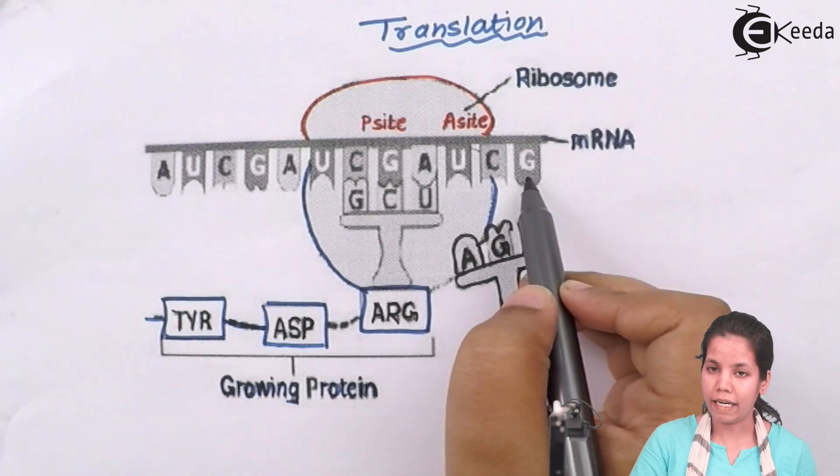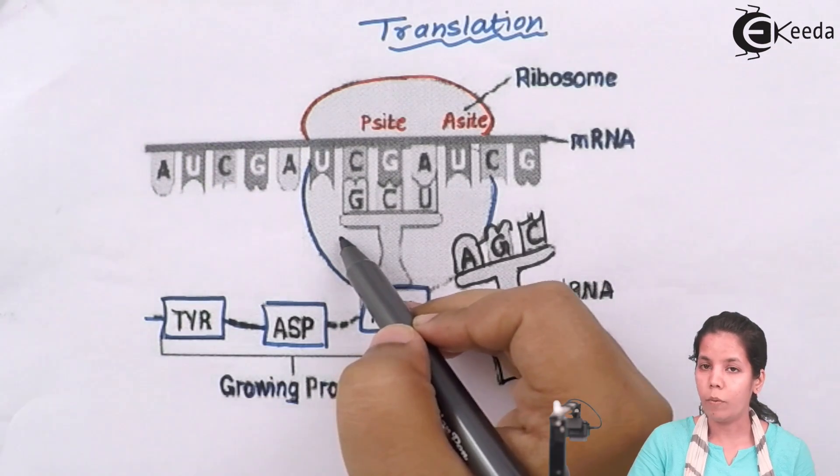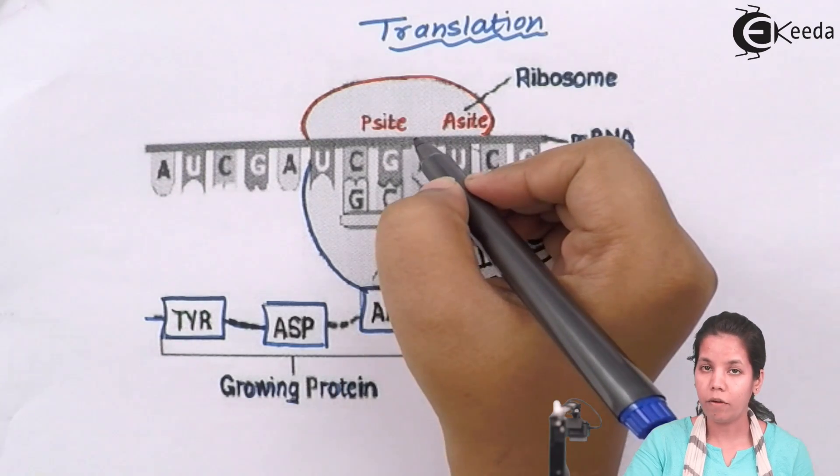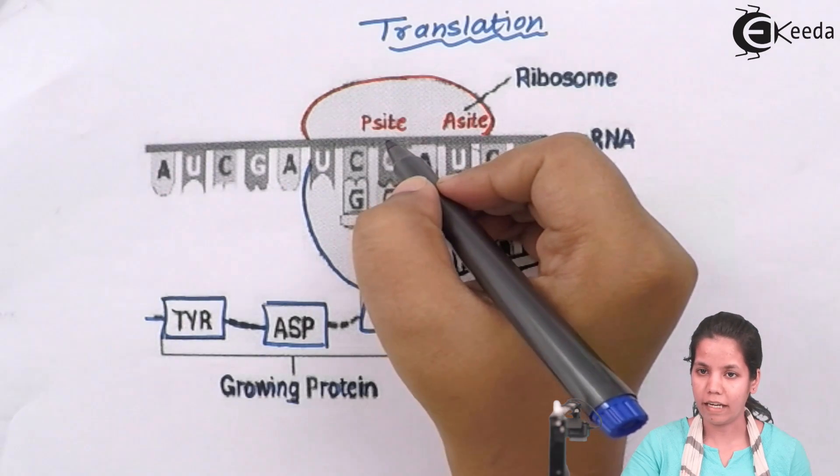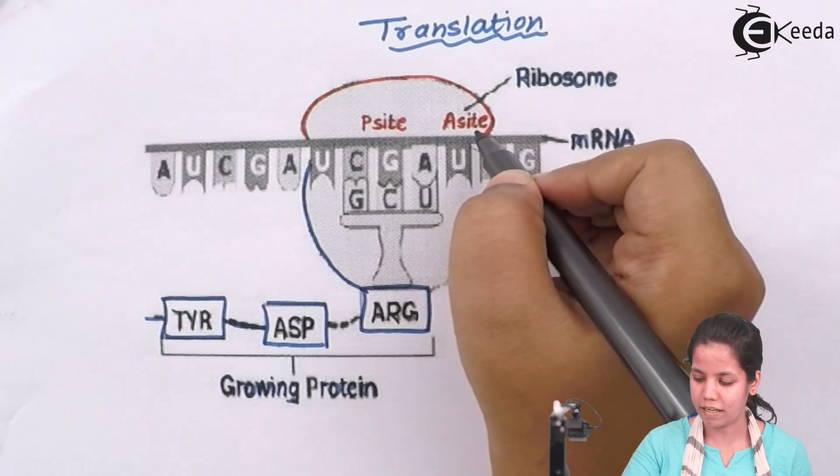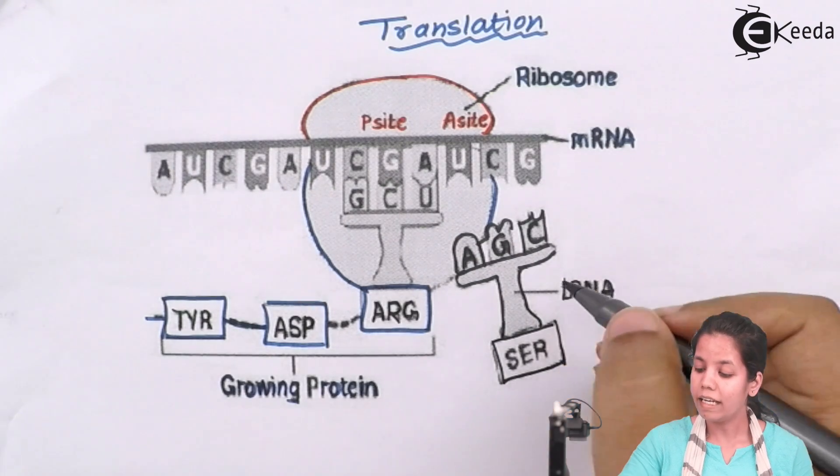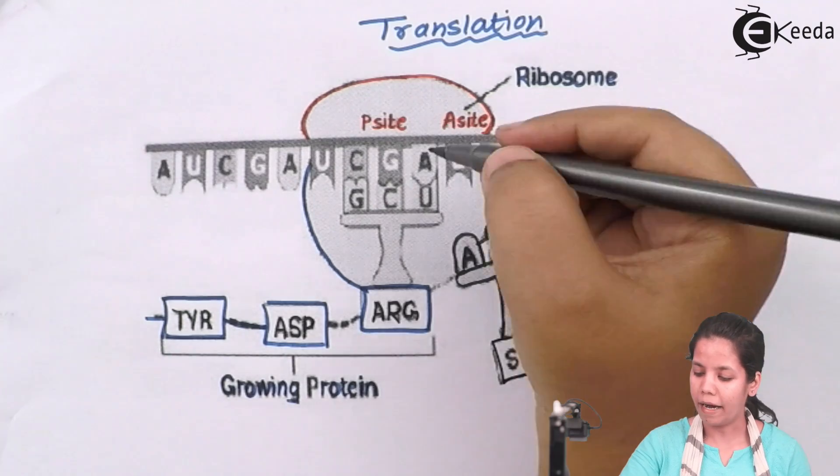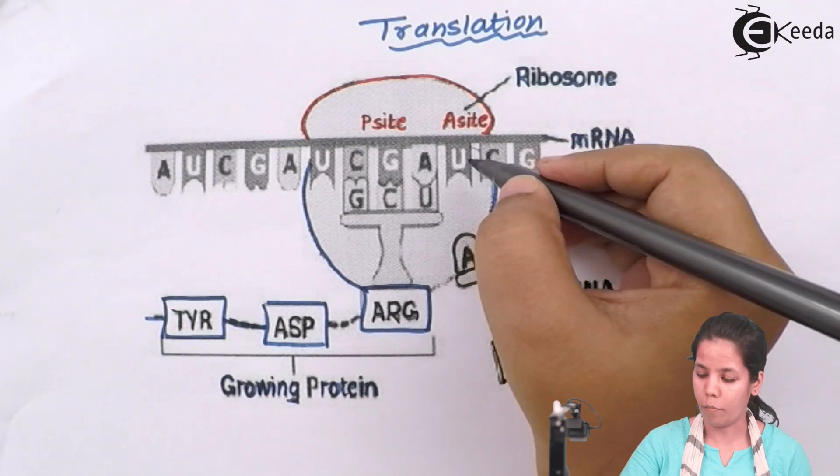To the mRNA, what comes and binds is your ribosomes which is your rRNA. Now, once ribosomes has binded, ribosomes have P-site and A-site. The P-site is the entry site and A-site is the exit site. Now, your tRNA will carry nucleotides which are nothing but anti-codon and these anti-codons will bind to the codon region to form anti-codon and codon complex.